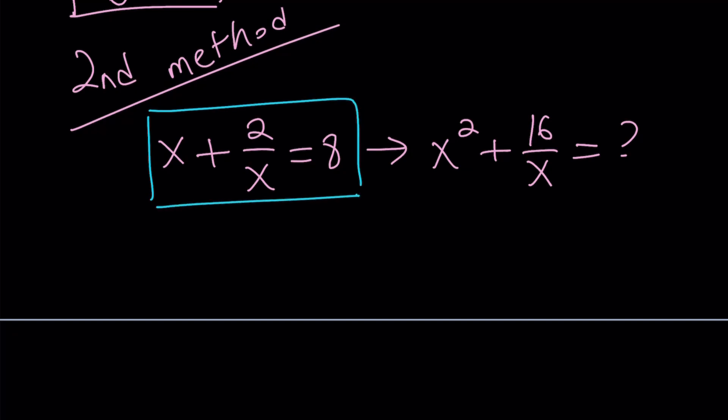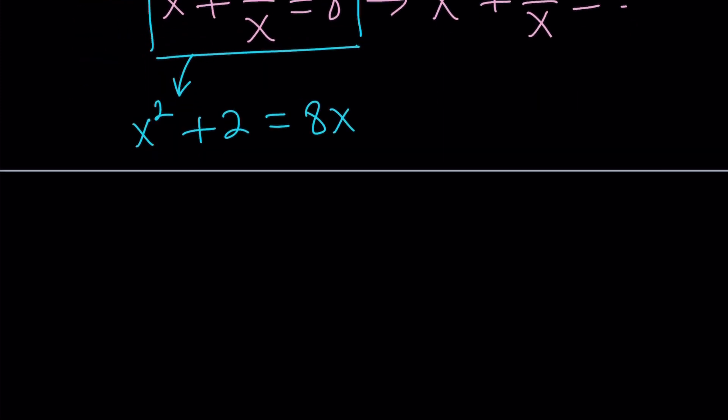Now, instead of solving for x values, we're going to do something different. Something close. Anyways, let's just multiply everything by x again. Again, this time, instead of solving for x, we're going to isolate x squared.